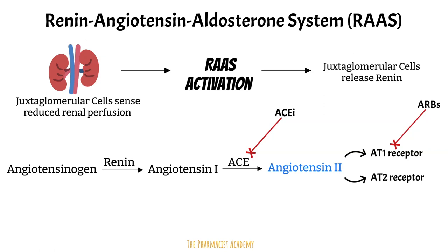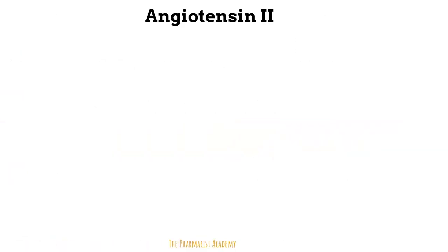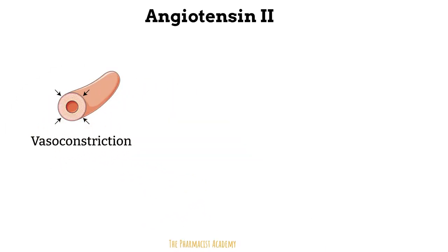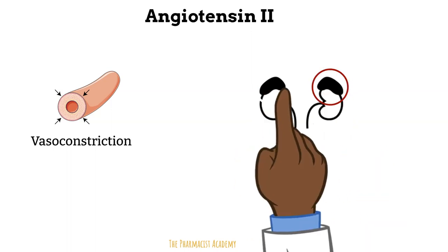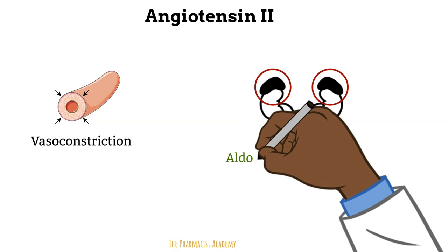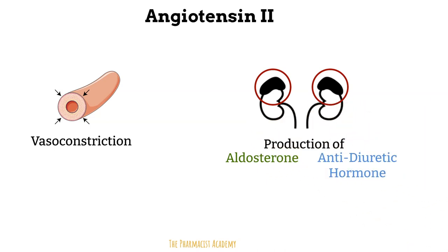So what exactly are these immediate and chronic effects? Whenever the body senses reduced blood flow to any organ, it will try to correct this by increasing blood pressure. Angiotensin 2 tries to fix the problem of reduced blood flow to the kidneys by causing vasoconstriction, which will ultimately increase systemic blood pressure. Next, it stimulates the adrenal cortex — a triangular-shaped gland located right on top of your kidneys — leading to production of aldosterone and antidiuretic hormone. Aldosterone works by reabsorbing sodium in the kidneys back into the blood, increasing blood volume and therefore blood pressure.